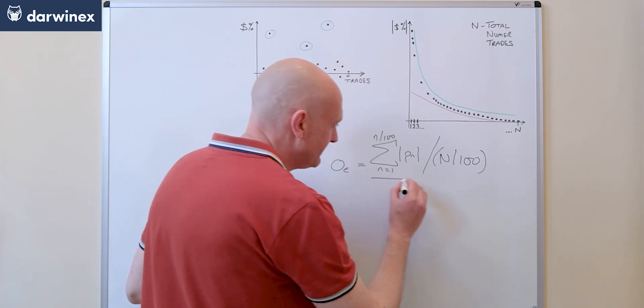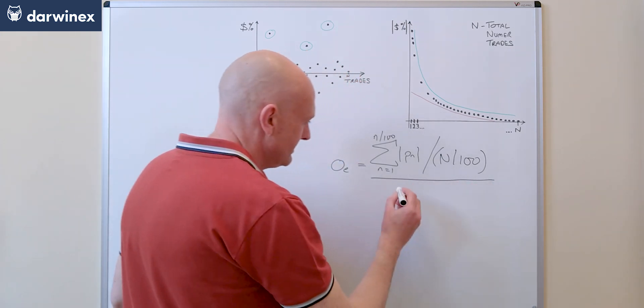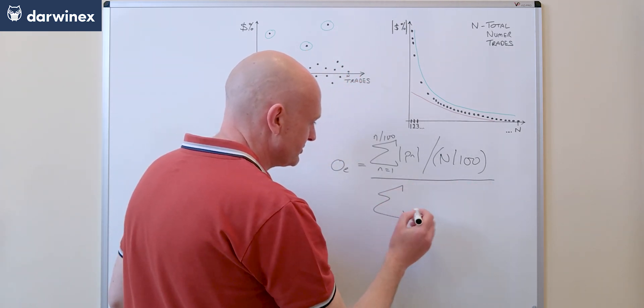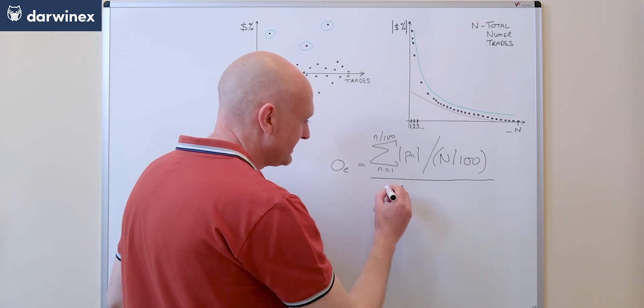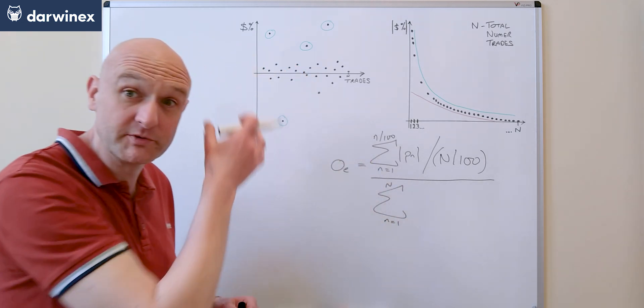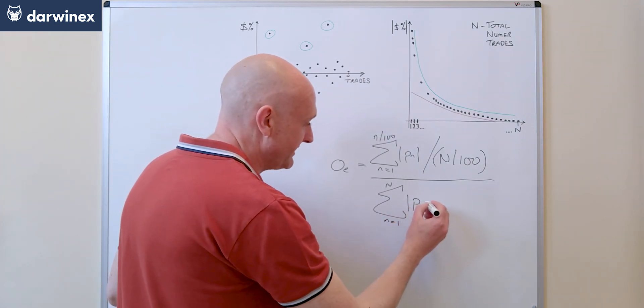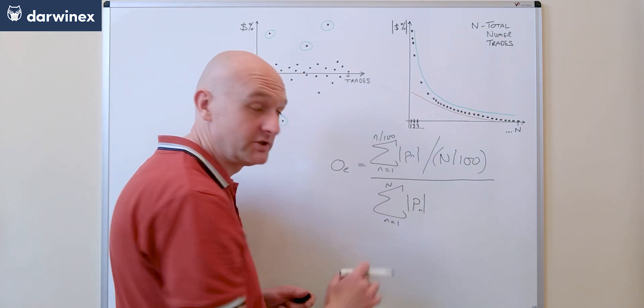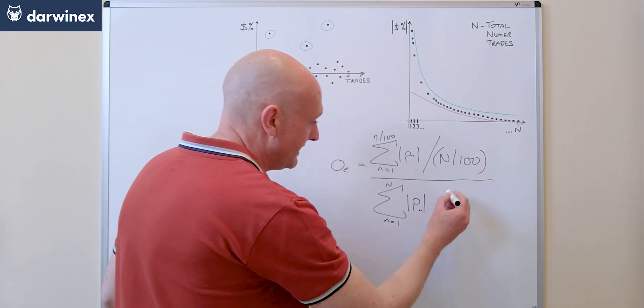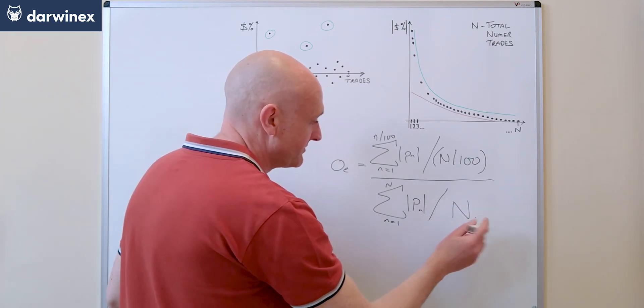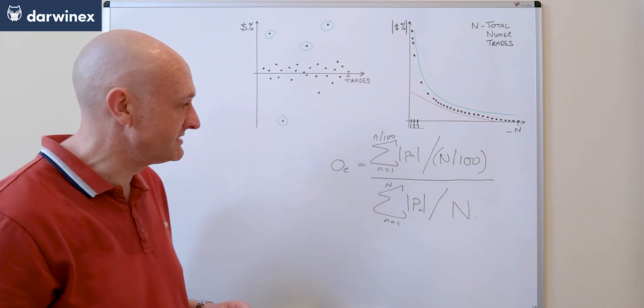And then we divide that by the sum of all trades. So this time we're going from one all the way up to the number of trades in the system of the absolute magnitude of the profit or loss, and this time we're just dividing by the total number of trades.